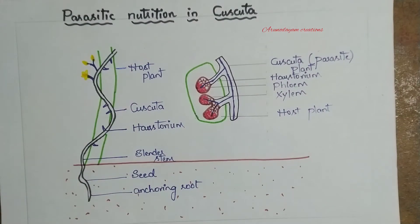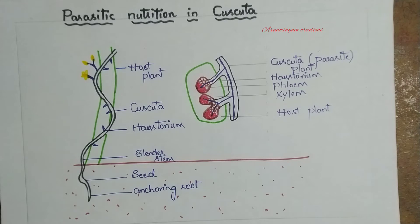Cuscuta is commonly known as the dodder plant. It belongs to the morning glory family, Convolvulaceae. In the case of Cuscuta, it is leafless in nature.